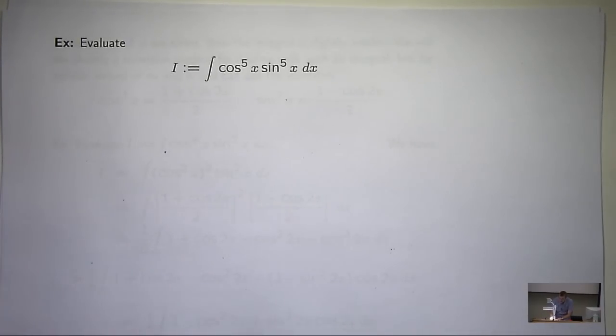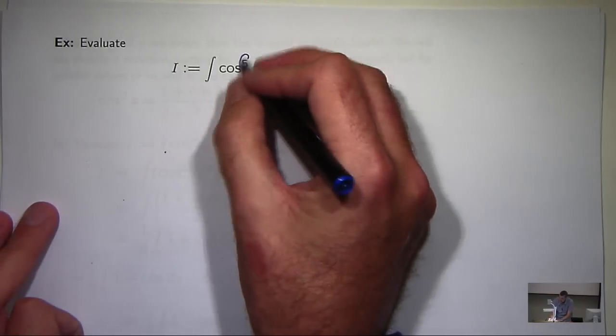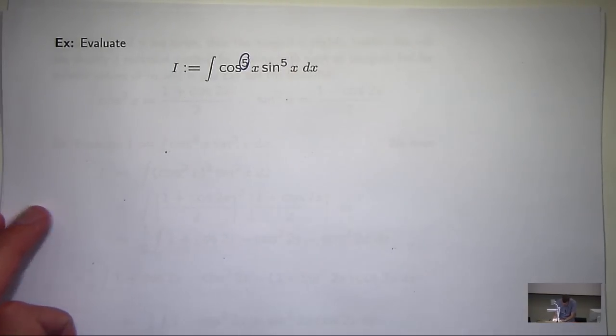In this case, both the powers are odd. So we've got an odd power here and an odd power here. It doesn't really matter which way you break this up. I can either take a term out of sine x to the power 5 or a term from cos x to the power 5. I'm going to do the cos one.